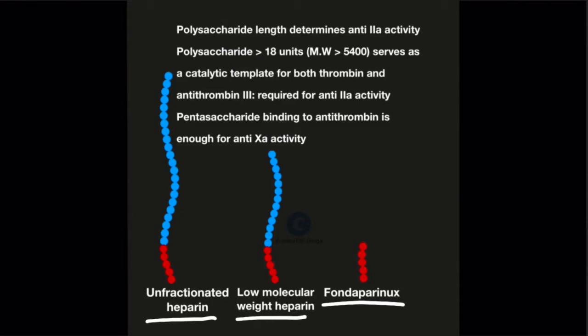As we can see, all these three molecules are polysaccharides of variable length. And how do they act? They act by inhibiting activated coagulation factors, factor 10 or factor 2 or both of them.